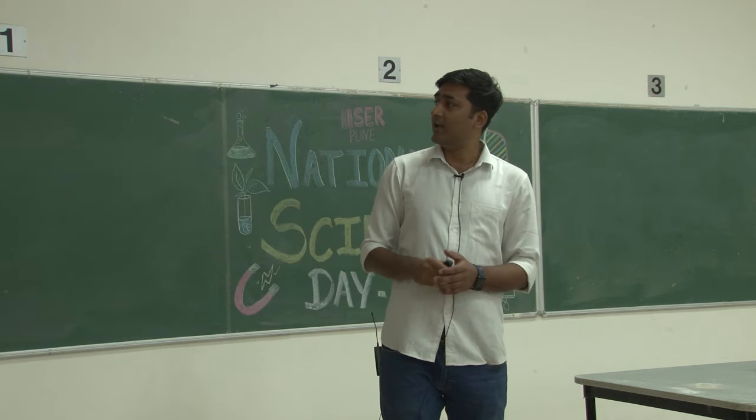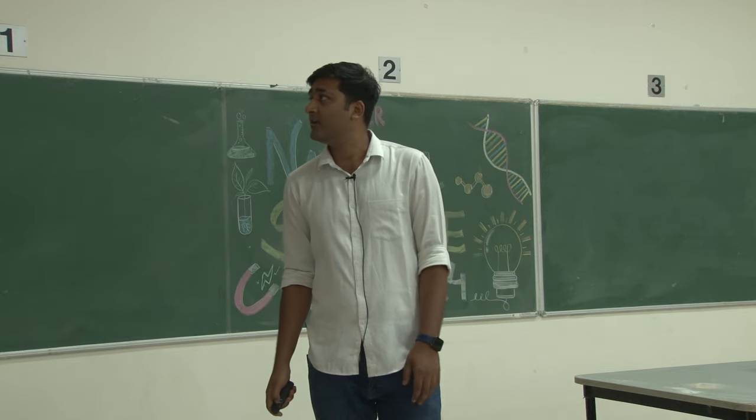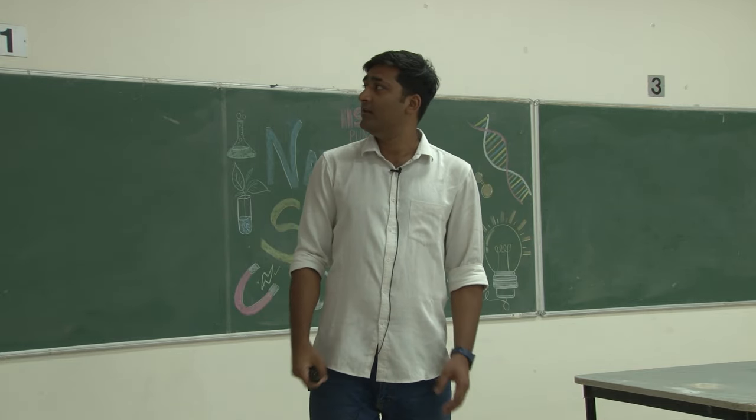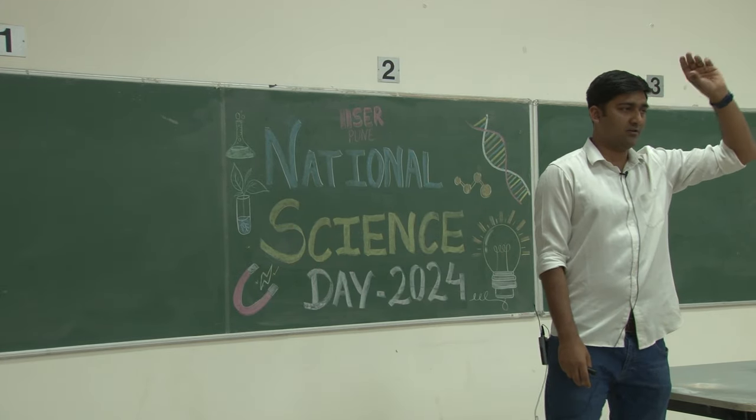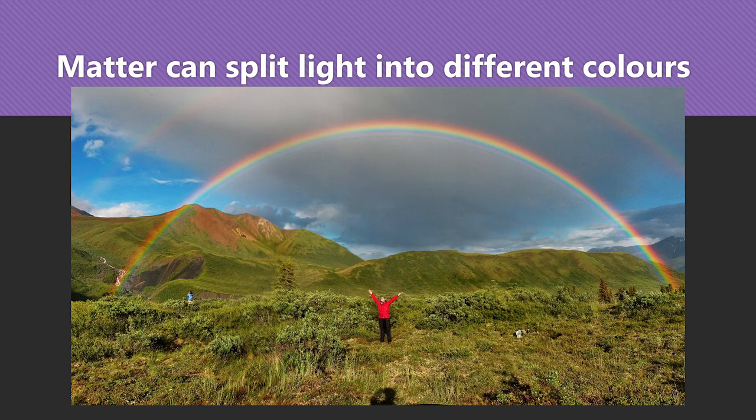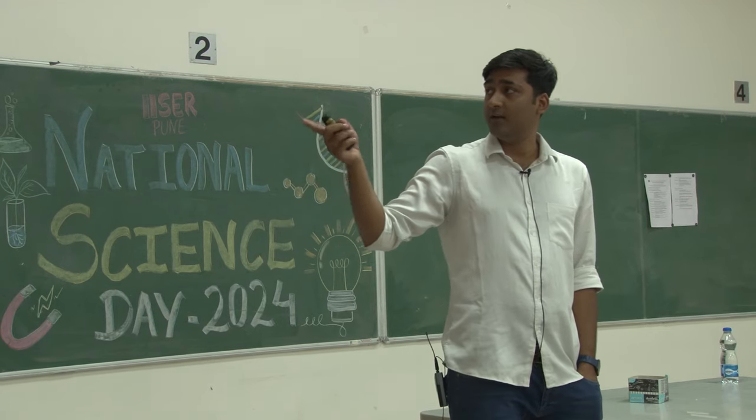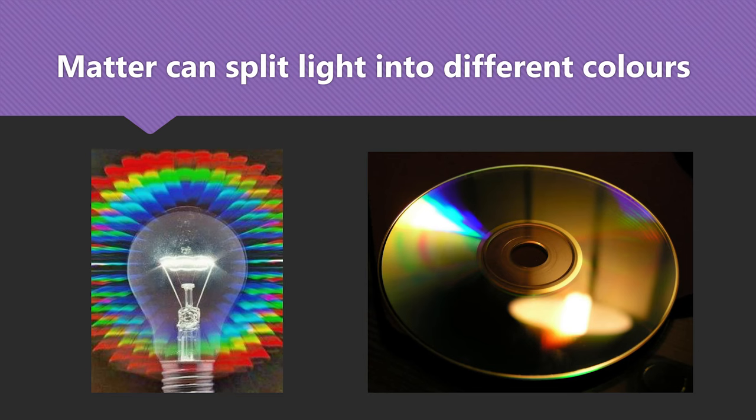And these colors, different colors are different. They can split light into colors in different ways also. Now these splittings do not happen because of different speed of light, but still they also split light into colors.